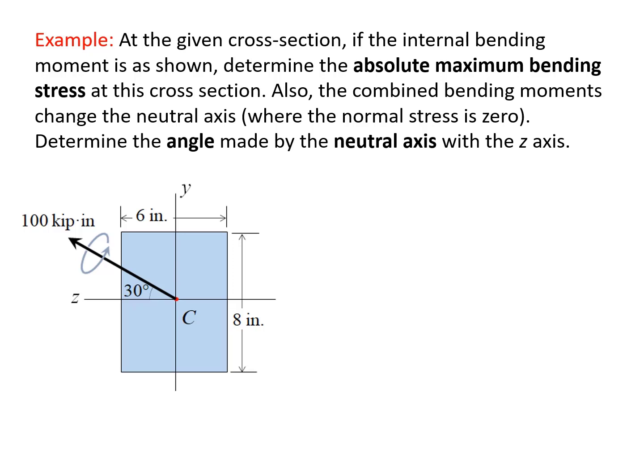Here we have an example from the mechanics of materials class. We have a 2D image showing the rectangular cross-section of a member. This cross-section has a width of 6 inches and a height of 8 inches. We can see the y-axis and the z-axis as well as the centroid point C. A bending moment is applied to this cross-section. The magnitude is 100 kip·inch — kip is kilopound — and the direction is at a 30-degree angle with the z-axis.